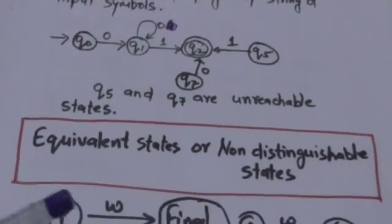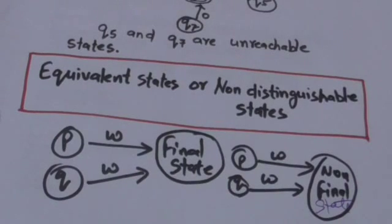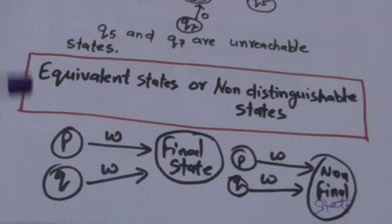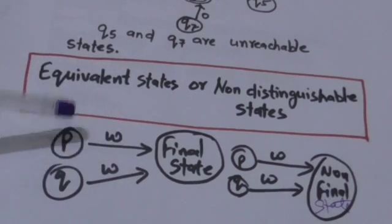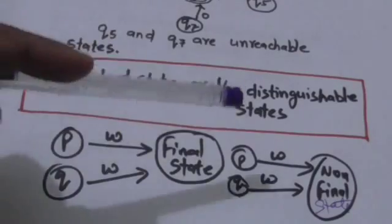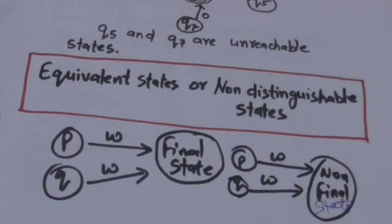The second concept is equivalent or non-distinguishable states. Two states P and Q are equivalent if, for each string of input symbols W, either they both have a transition to a final state or they both have a transition to some non-final state. So after removing unreachable states, we have to detect equivalent or non-distinguishable states and merge them.